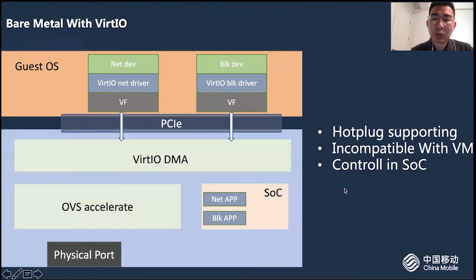Since the VirtIO is based on the standard spec, there is no need to make any changes for software. In this way, the virtual machine image can share the driver with our bare metal, which is a big problem in traditional bare metal solutions. The virtual net and block devices in VirtIO are controlled in SOC, and all data will be passed into the network. Finally, the OVS acceleration module will transmit it to the backend, which is the storage or network service via the physical port. This is the introduction of the overall architecture of Elastic BareMetel. Next, my colleague Rongin will introduce the OVS offload of this product.